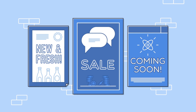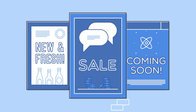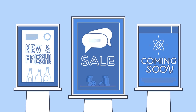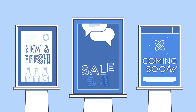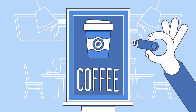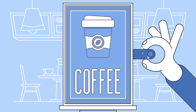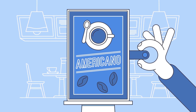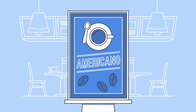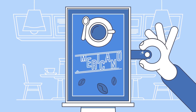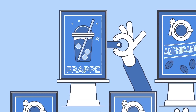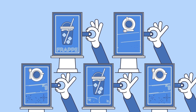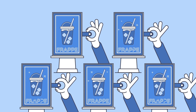Digital signage is the best way to get engaging content to the right audience at the right time. But even if you only have one screen, manually loading your content takes a long time and isn't very flexible. The more screens you have, the worse it gets.